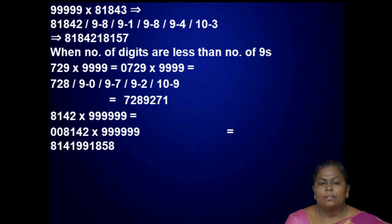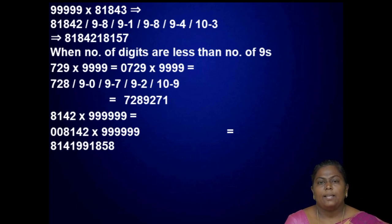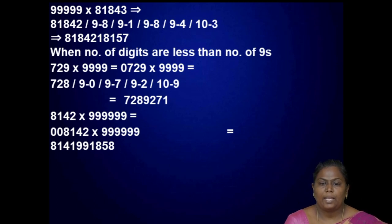Another example: 99999 into 81843. First reduce 81843 by 1 to get 81842. Then subtract each digit from 9: 8 from 9, 1 from 9, 8 from 9, 4 from 9, and last digit 3 from 10. So the result is 8184218157.